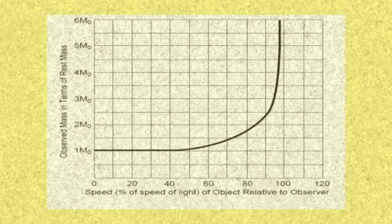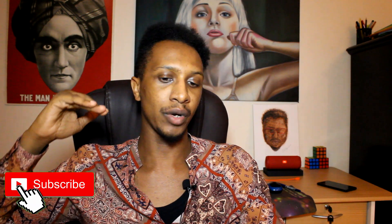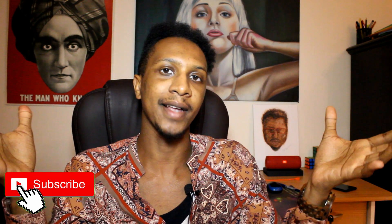The mass increases exponentially — the faster it is, the mass doesn't just double; it keeps increasing and skyrockets the faster it goes. There's actually a graph for that. Here's an example: when an object is moving at 10% the speed of light, the mass of this object will increase by half its original mass only. But once you get to 90% the speed of light, the mass of the object would have already become more than twice its original mass. And once you approach the speed of light, the mass would have increased so much that it became practically infinite.